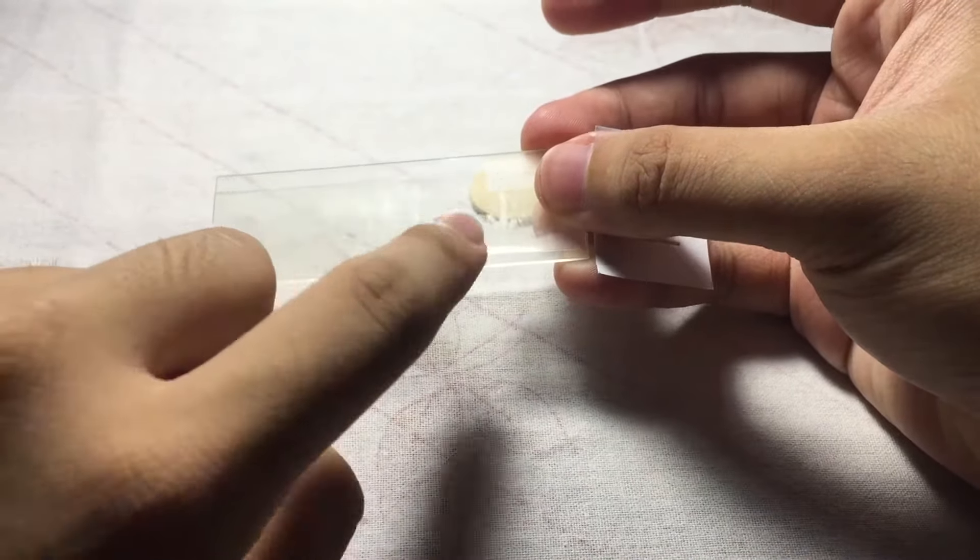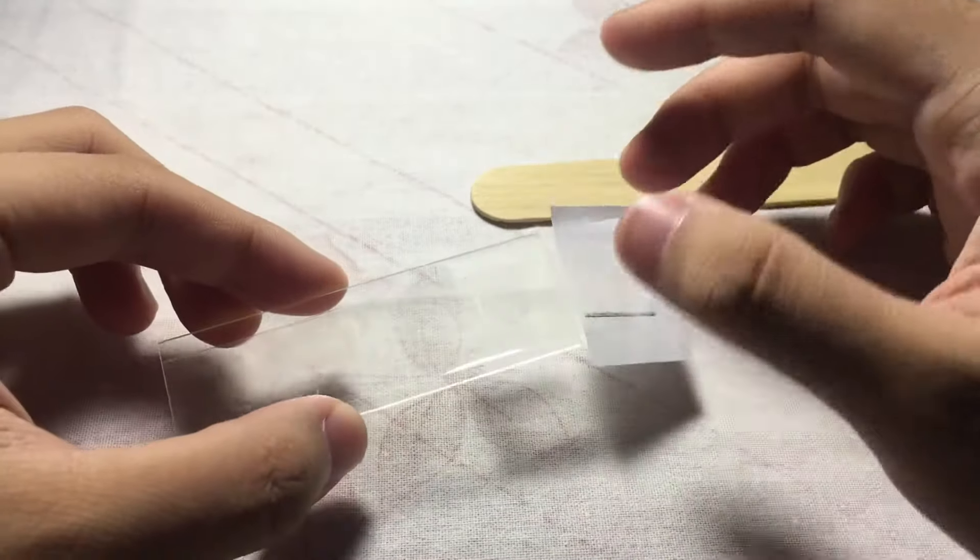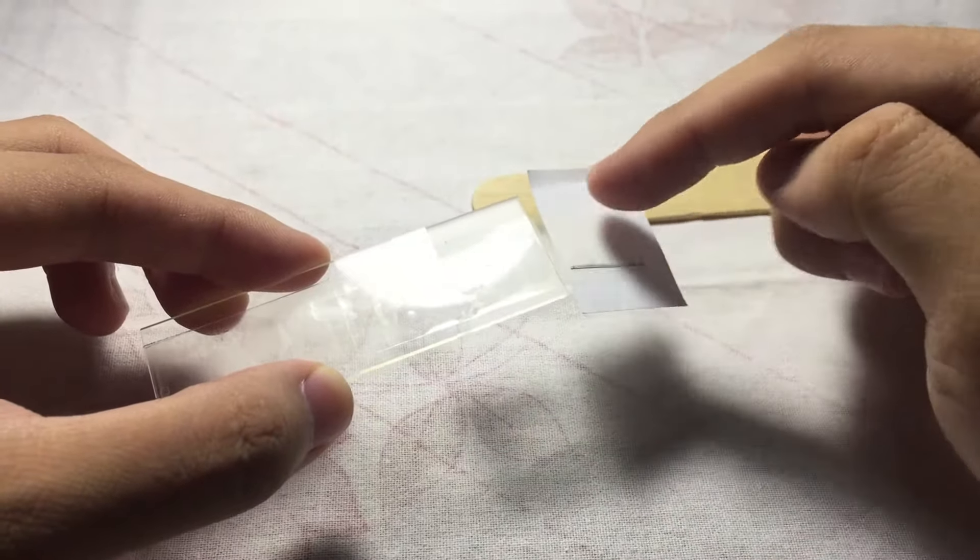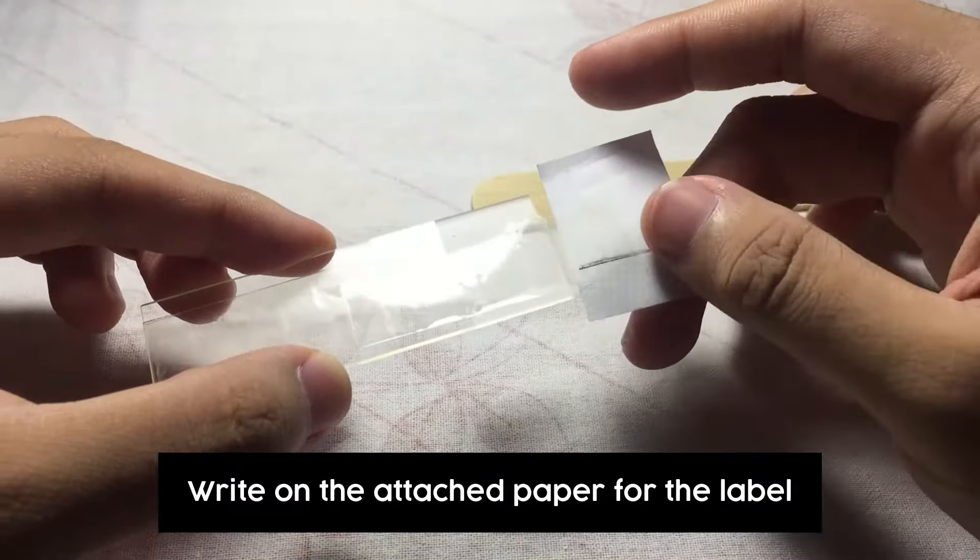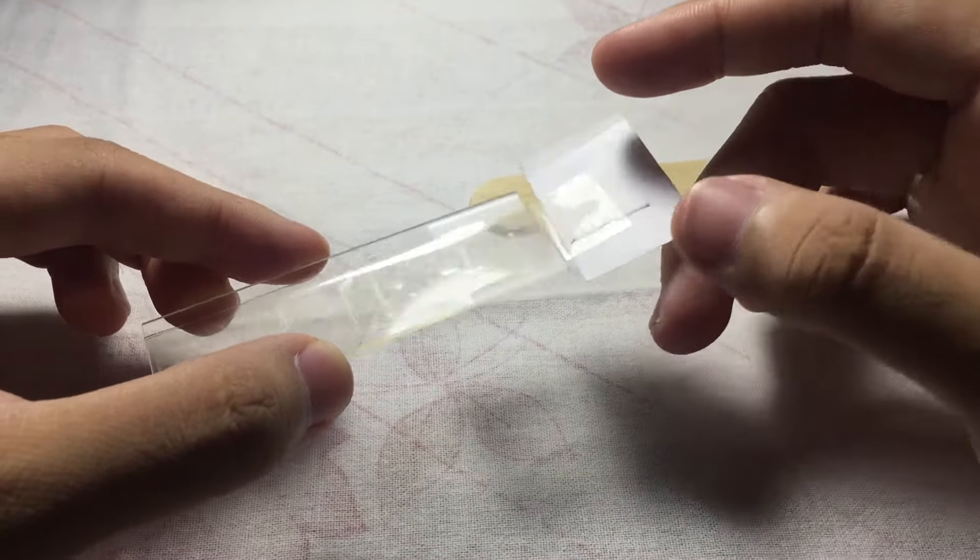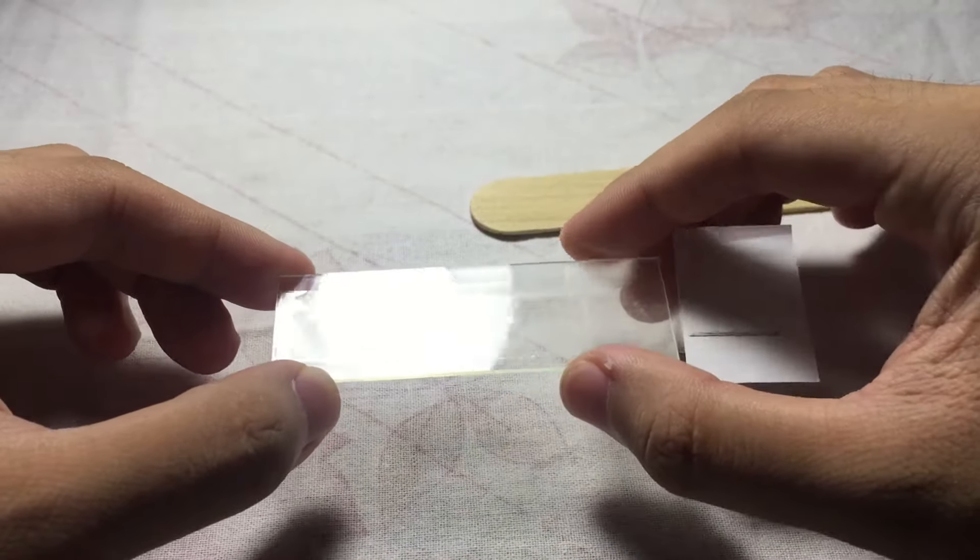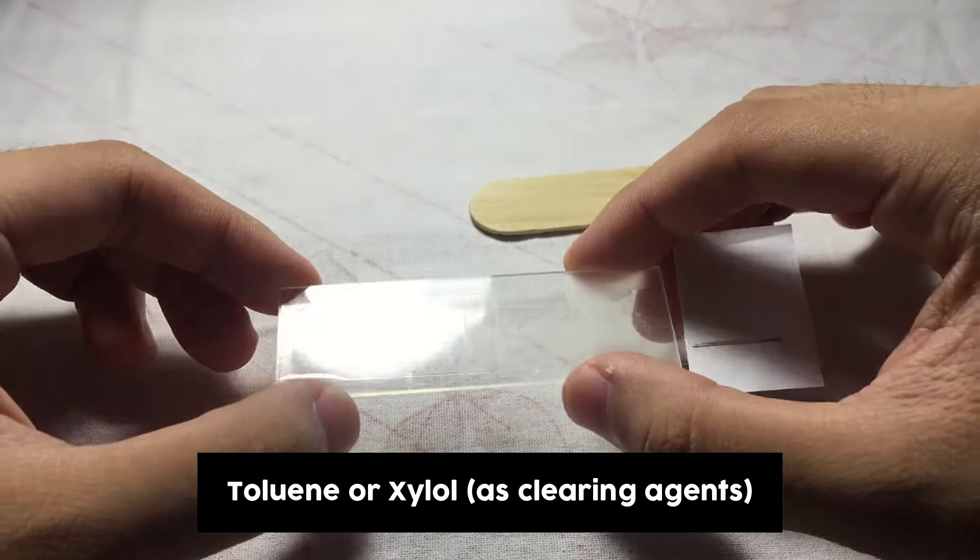Basically that's it. This is now your scotch tape swab where you examine. This is where your eggs are located. You examine under the LPO of the microscope. Do not forget after getting your sample to label the slide with the name of the patient, birthday if available, and other important information.